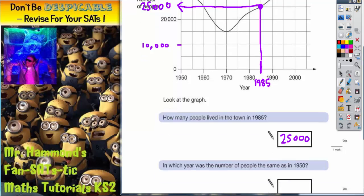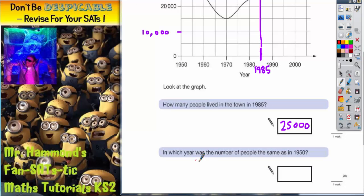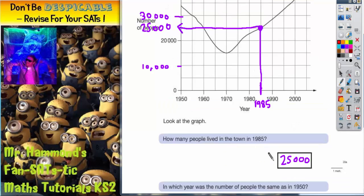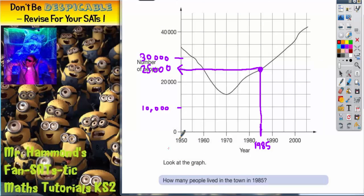Well, let's have a look at the second part. In which year was the number of people the same as in 1950? Well, 1950 was here. So if I follow it along, I'm looking for something that's level with that red point. So when I get level, I am here. So the question is,